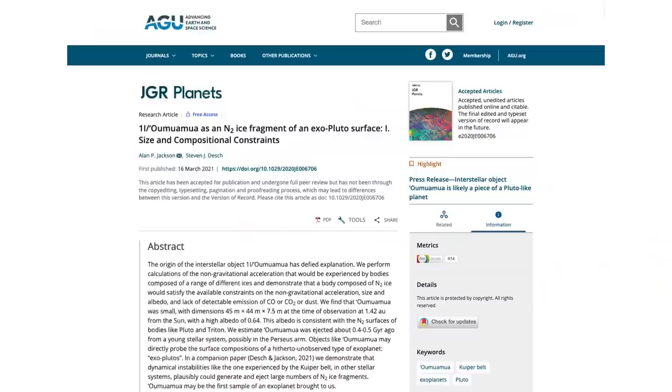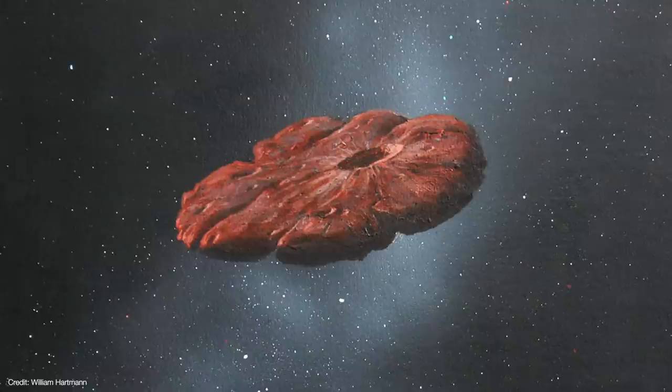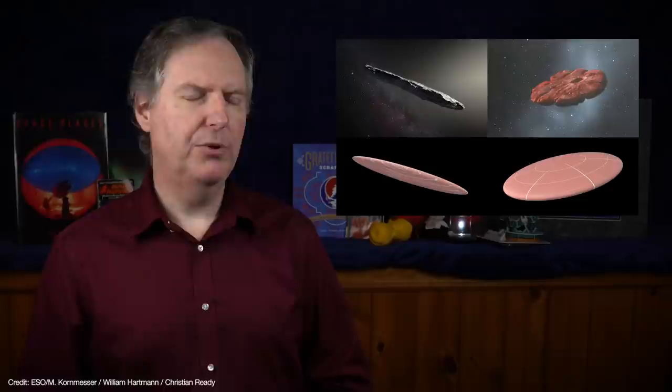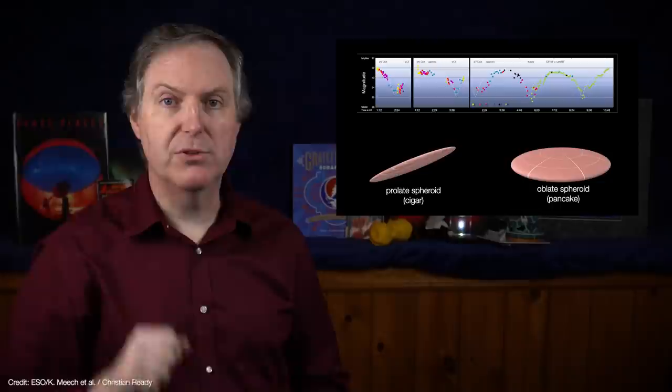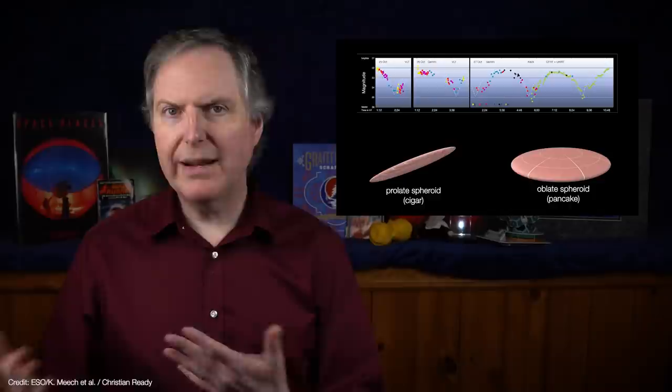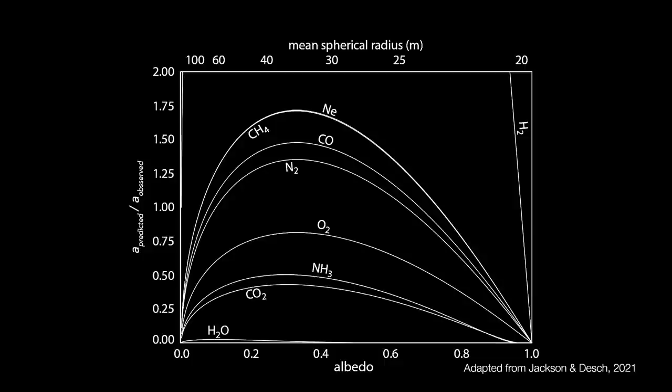But perhaps other kinds of ices would explain Oumuamua. To that end, Alan Jackson and Stephen Desch developed a sophisticated model to calculate the rates of mass loss and corresponding acceleration on a pancake-shaped oblate spheroid. As an aside, many astronomers think Oumuamua was probably pancake-shaped, because a cigar Oumuamua would have to have had a very specific spin orientation to reproduce the observed light curve. A pancake, on the other hand, can create the observed light curve over a wider range of orientations.